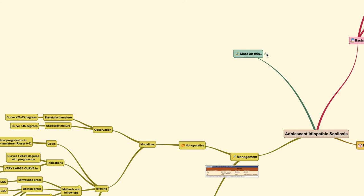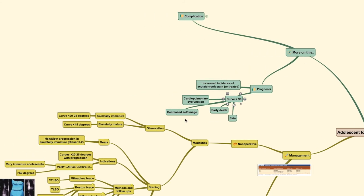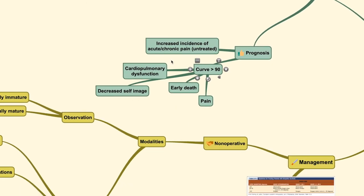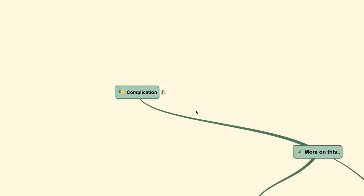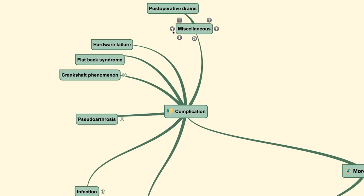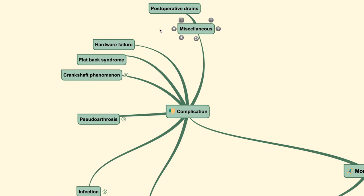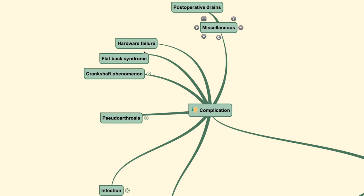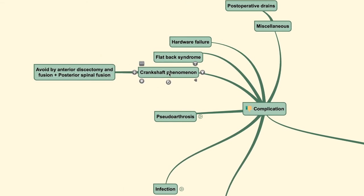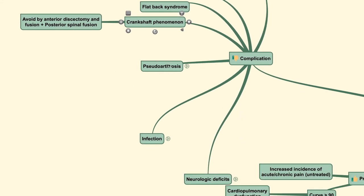Regarding prognosis, if AIS is left untreated, there is an increased incidence of acute or chronic pain. If the curve progresses beyond 90 degrees, it can induce cardiopulmonary dysfunction, decreased self-image, and can be a cause of early death. Post-operative complications include wound drainage, hardware failure, flat back syndrome, and crankshaft phenomenon — the last of which is avoided by performing anterior discectomy and anterior fusion in addition to posterior fusion.